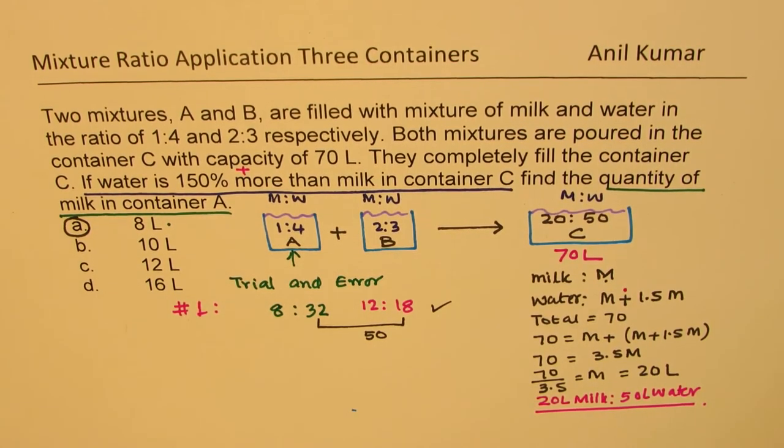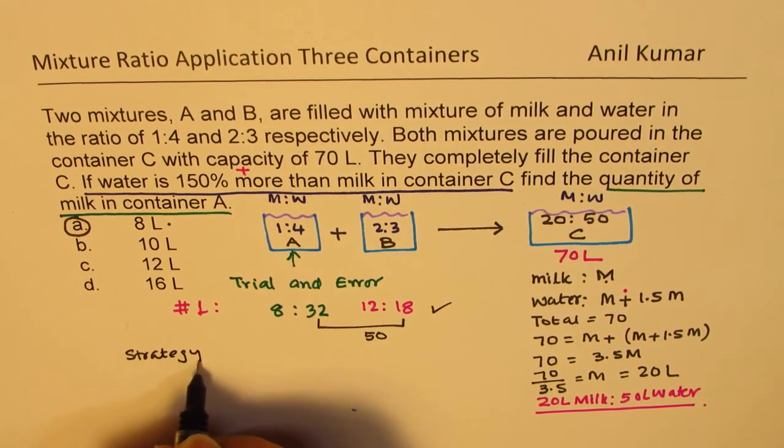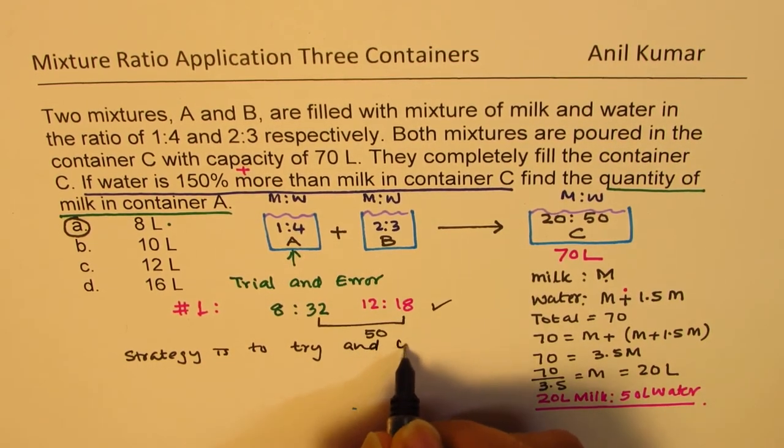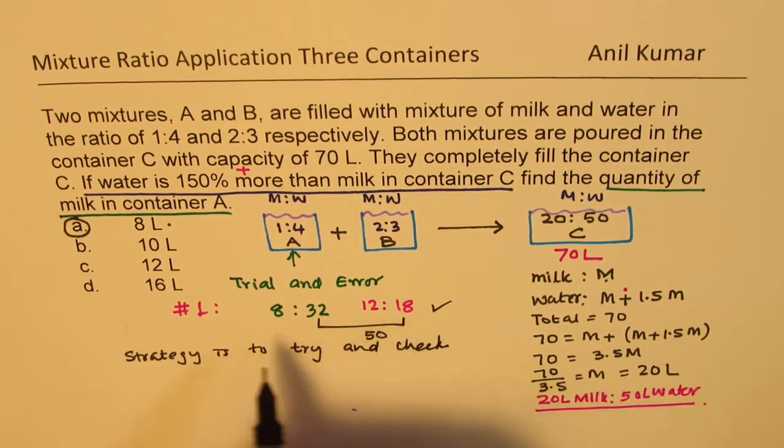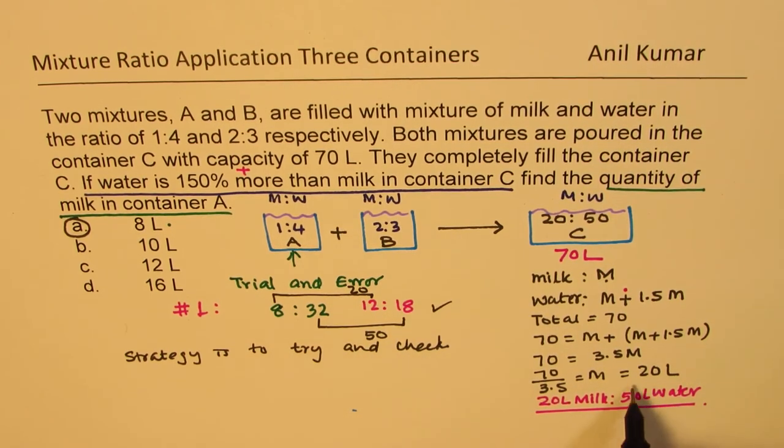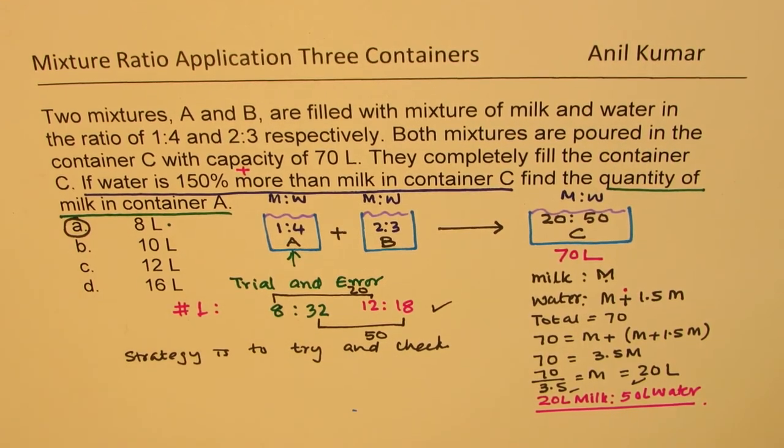Do you get the idea? So our first attempt of trial is perfectly fine. And that is how you could easily solve this question. Probably the fastest way. You could use allegation and so many other techniques. But I think for this, strategy here will be to try out. And when we tried, we figured out this is indeed 20 and that is 50. So both values worked out. And therefore, 8 liters of milk in A is the right option.